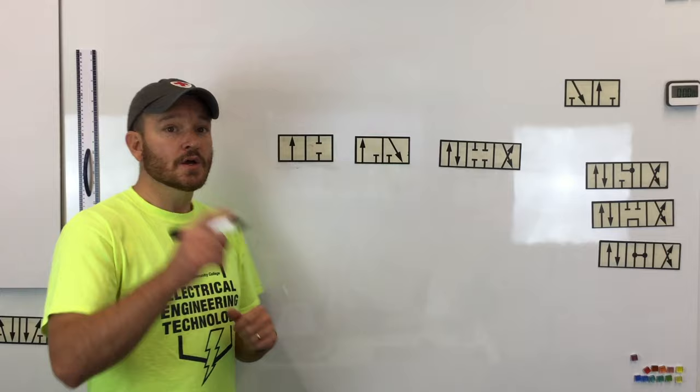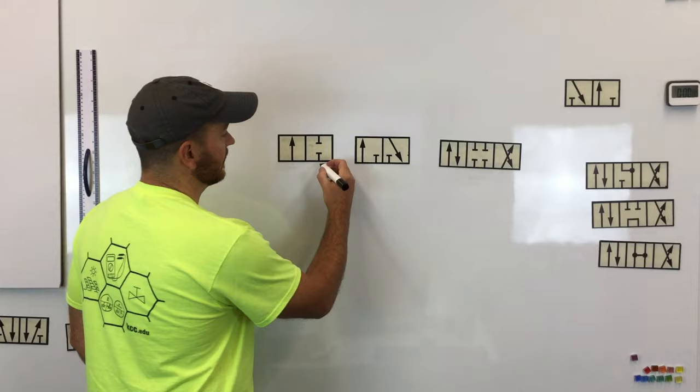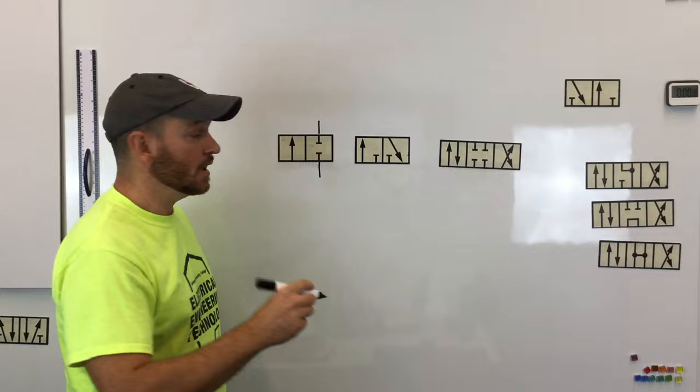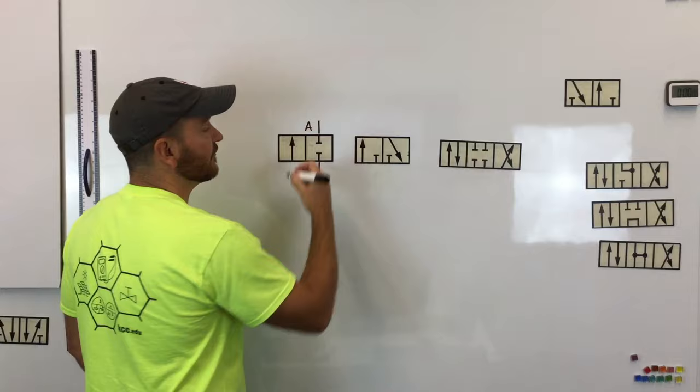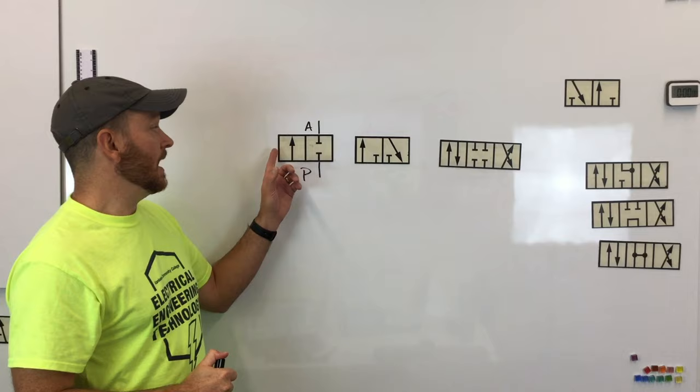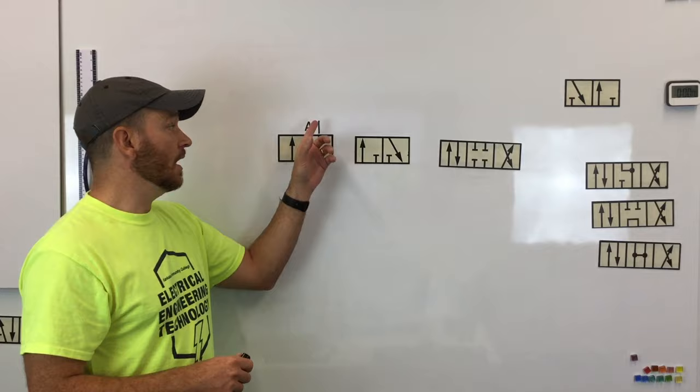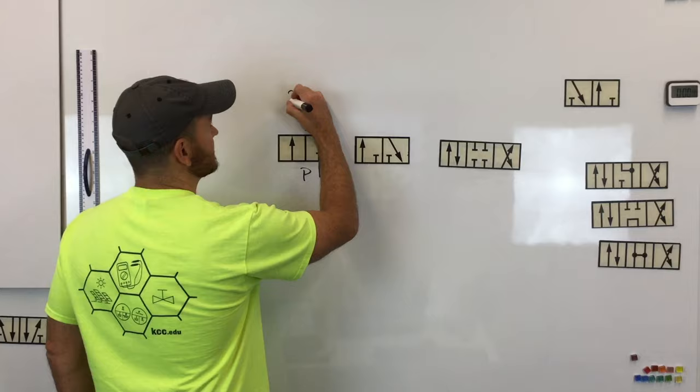The first one we want to look at is the two-position directional control valve, and this one has two ports on it. The P is the pressure port, and on the top is A for the actuator port. This would be considered a two-way, two-position directional control valve — most commonly identified as a two-two directional control valve.